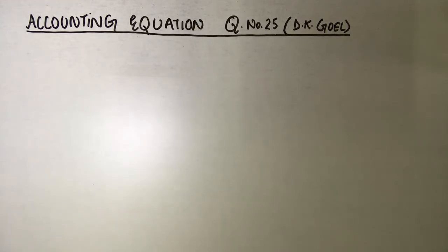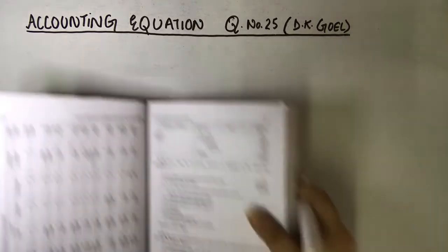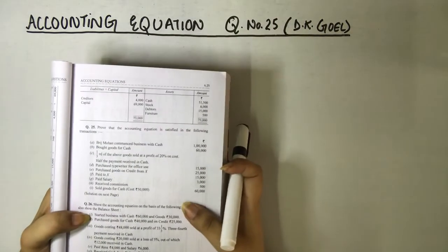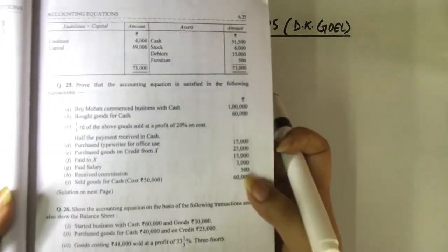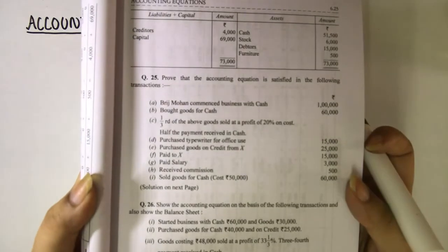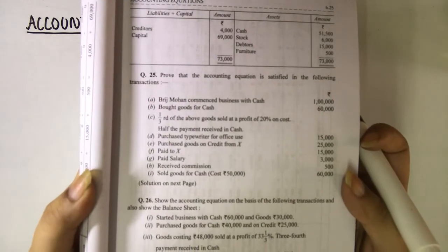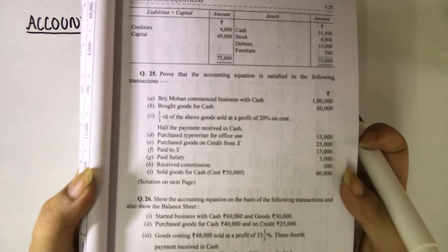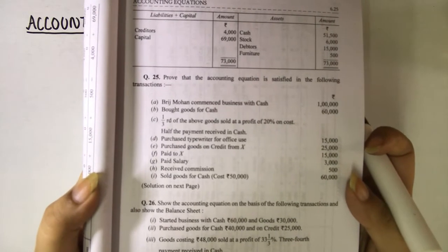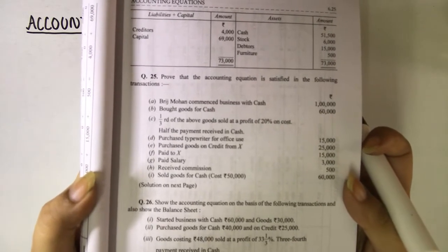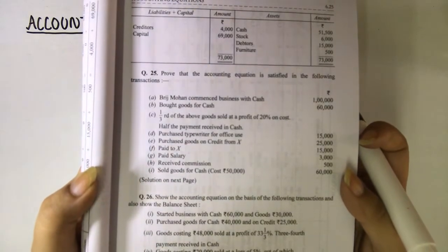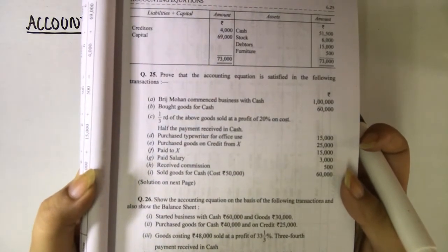Yes students, now we will do question number 25 of your book. As per this question, we have to prove the accounting equation that asset equals to liability plus capital. We have some points given.